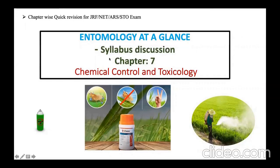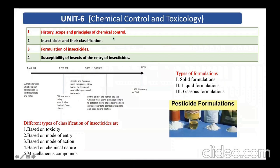Hello friends, today we are going to discuss the syllabus of Chapter 7 of entomology syllabus, that is chemical control and toxicology. Knowing the syllabus is very important for preparing any exam, whether it is JRF, NET, ARS, or STO exam. You have to be well versed with the syllabus. So coming to the detail of the syllabus.